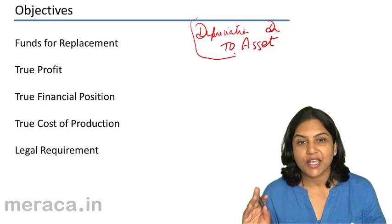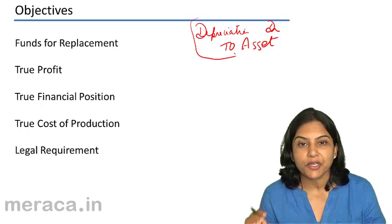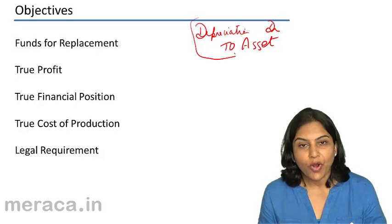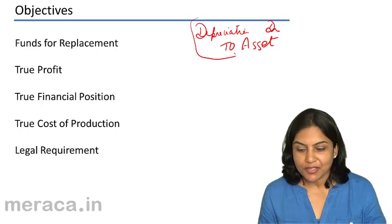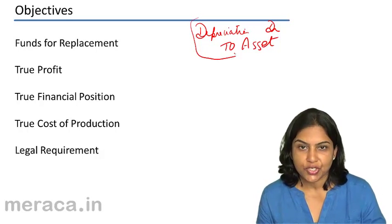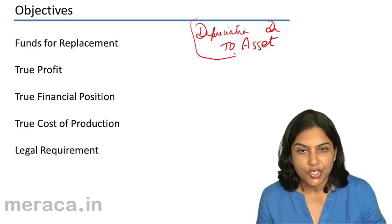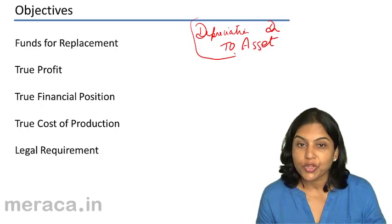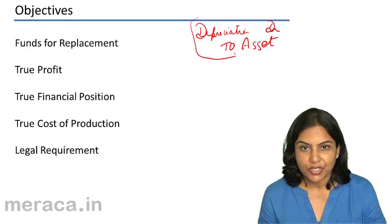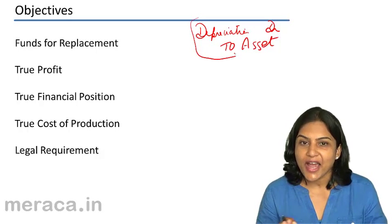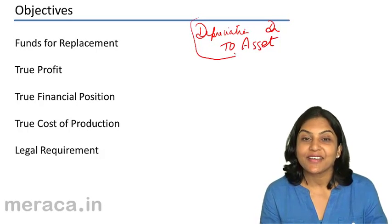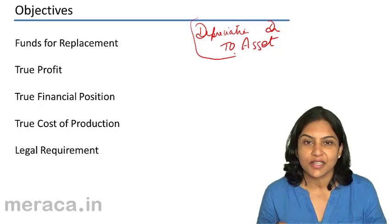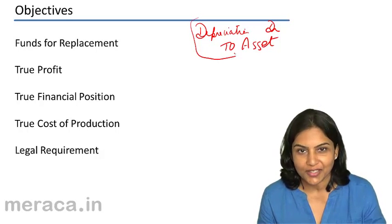There was a cash outflow only when we purchased the asset. So what happens is when we record depreciation — when we account for depreciation in our books — profits come down with no outflow of cash. So this cash, in a way, gets retained in the business. It remains in the business in some form or the other.